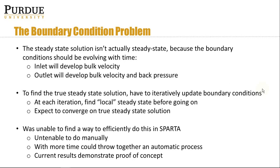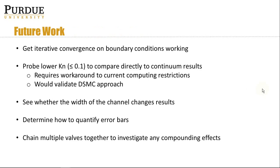I wasn't able to find a way to do this efficiently in Sparta, as it would have been too much effort to do manually. With more time I could probably run some scripts to make this an automatic process, but with the time constraints I think the current results demonstrate the concept well. Future work would include getting iterative convergence on boundary conditions working, probing lower Knudsen numbers so we can compare directly to continuum results, probing the effect of channel width, determining how to quantify error bars for DSMC measurements, and chaining multiple valves together to investigate any compounding effects.